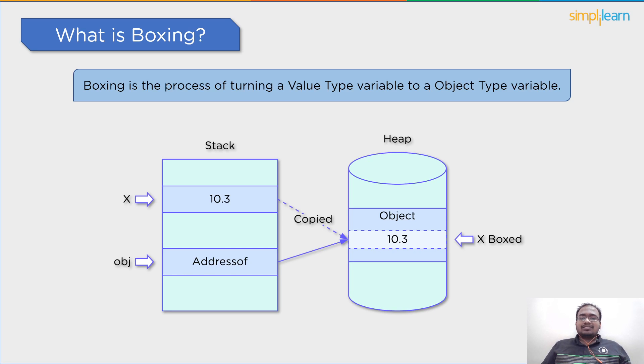Many people mistake boxing for converting a value type to a reference type, although this is not the case. Because if that were true, then integer value should be able to be transformed into a string or an array which are reference types.